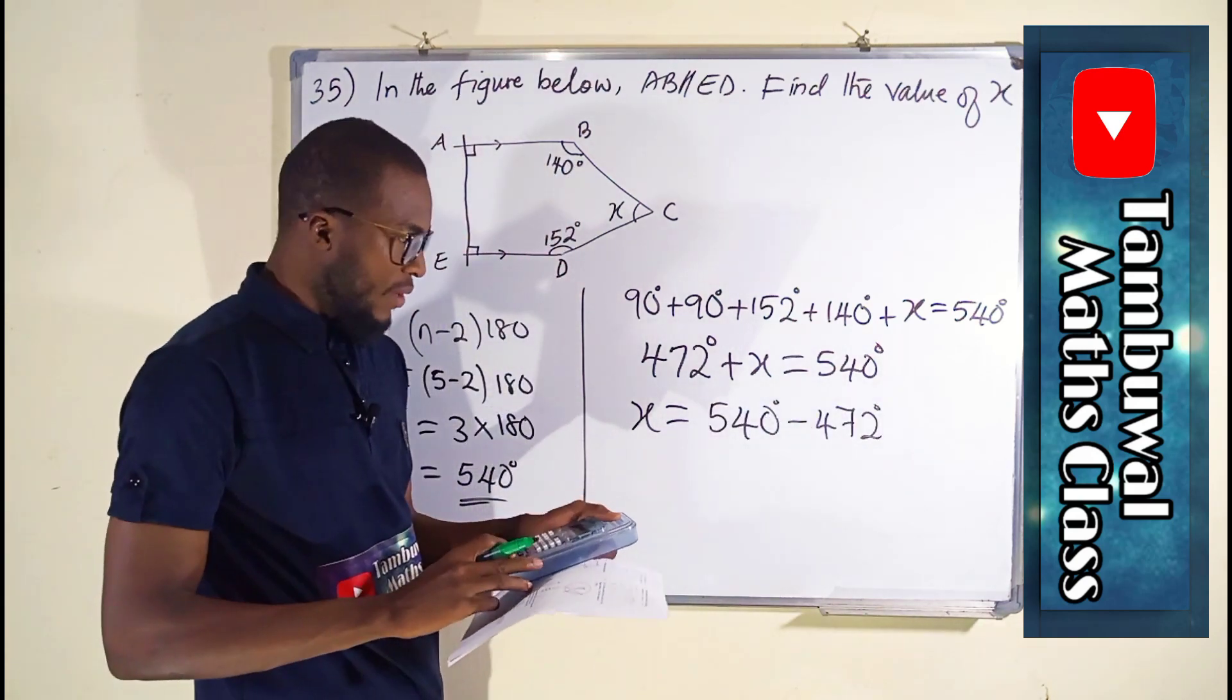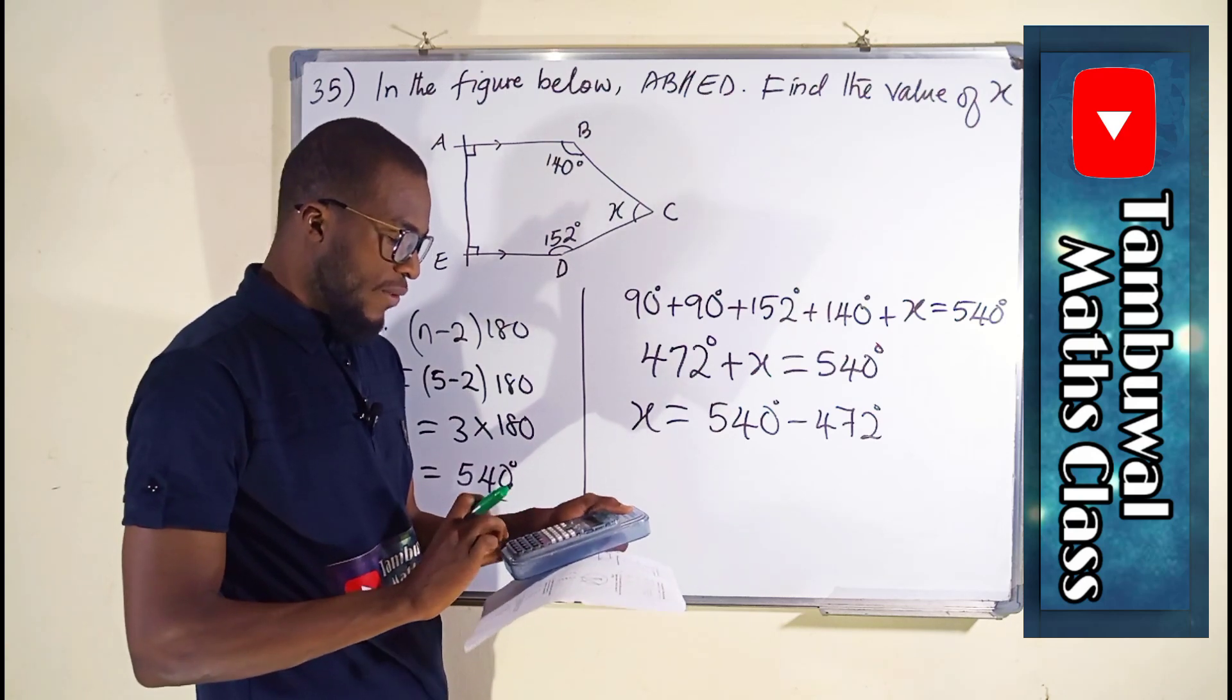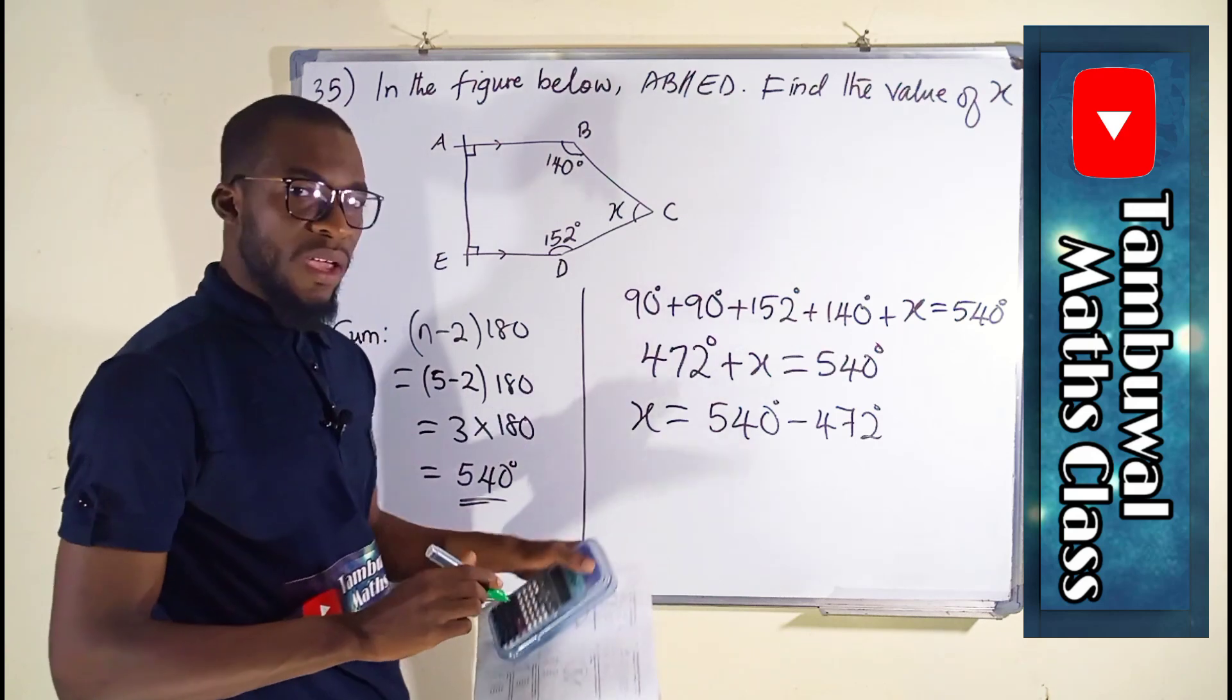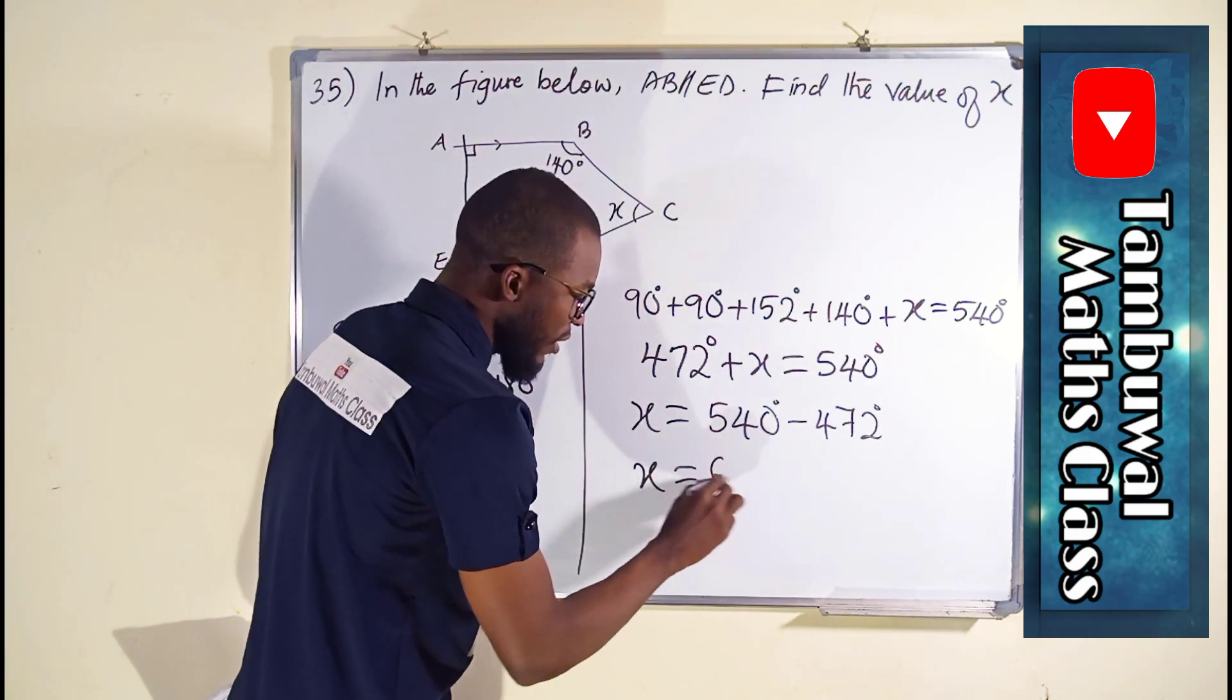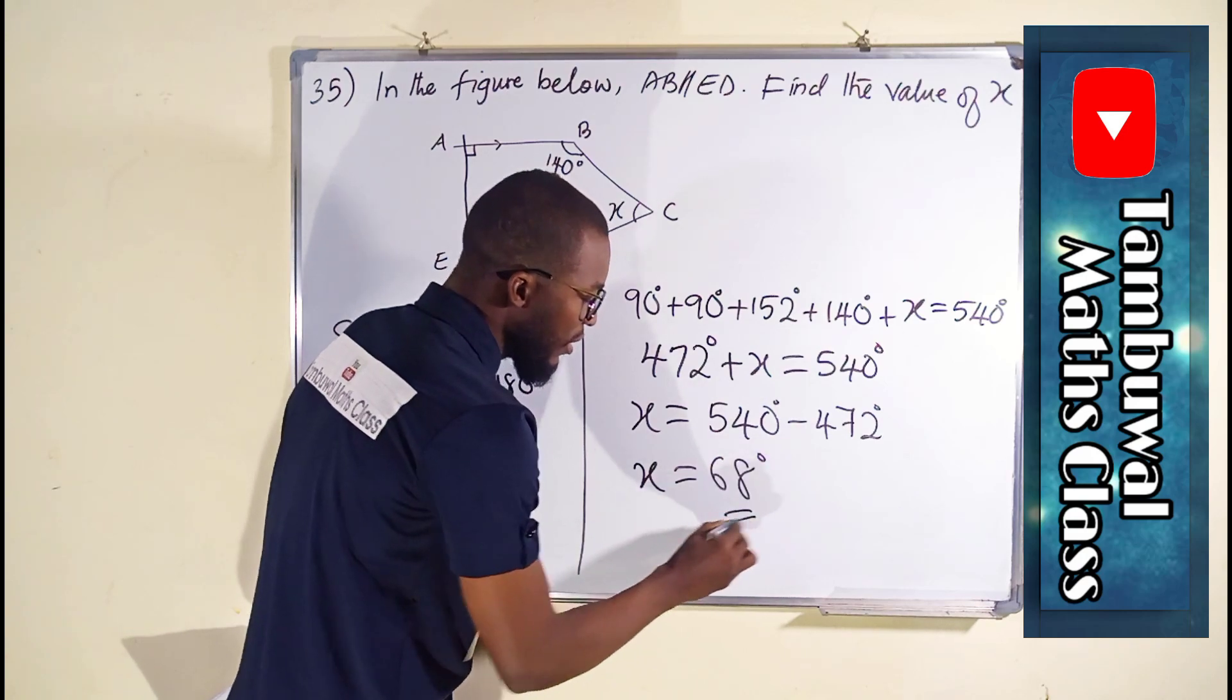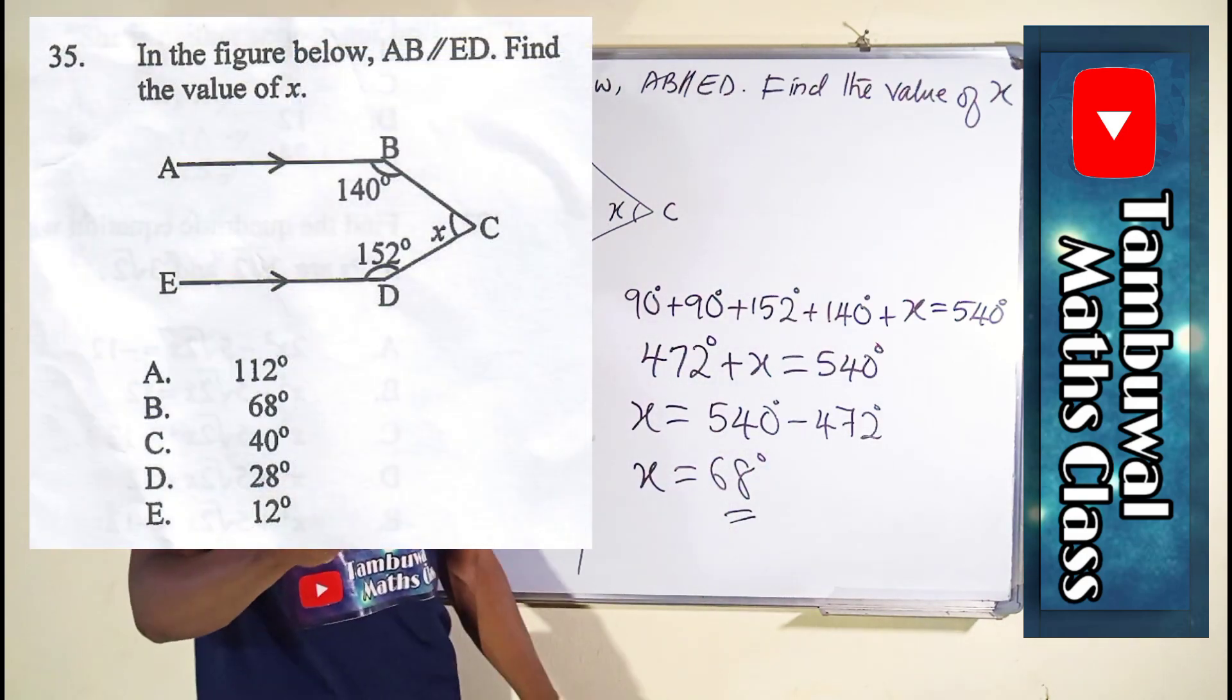If we subtract 472 from 540, we shall obtain 68 degrees. Therefore, our X is equal to 68 degrees, which we have here as option B.